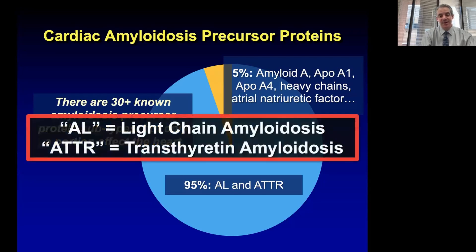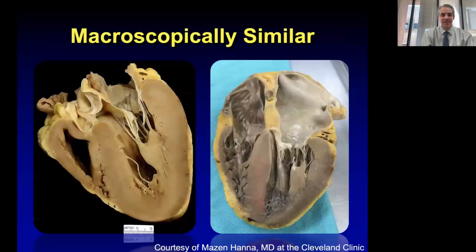For the rest of this discussion, every time you see the letters AL, I'm denoting light chain amyloidosis. And every time you see the letters ATTR, I'm denoting transthyretin amyloidosis.